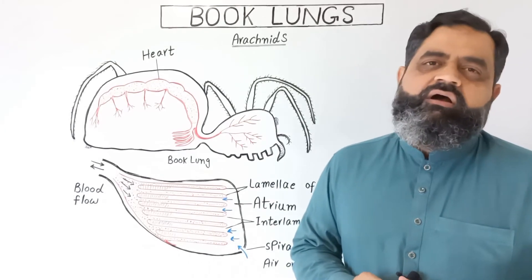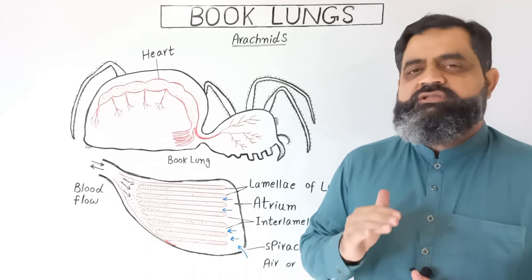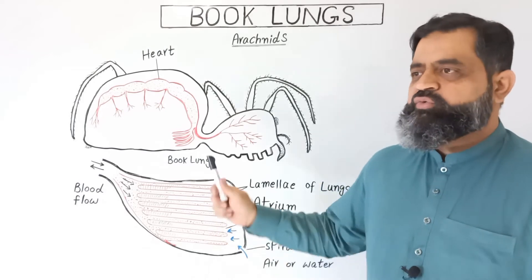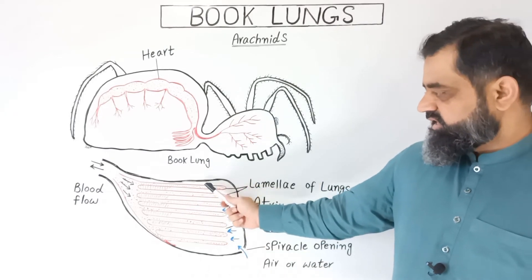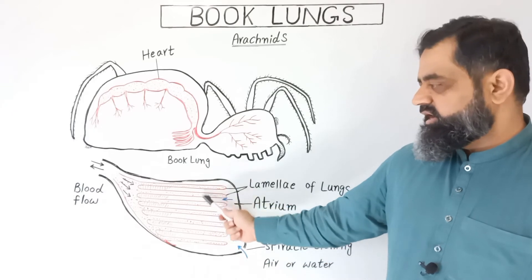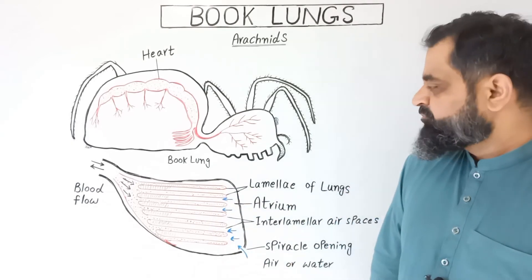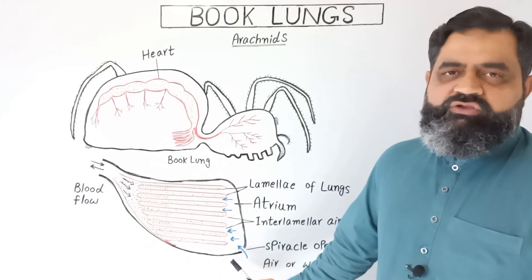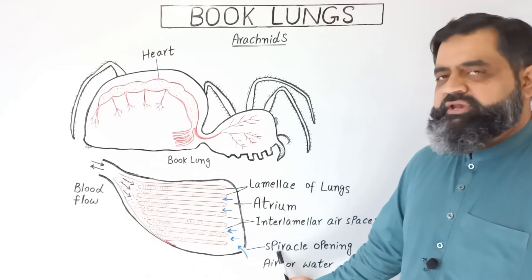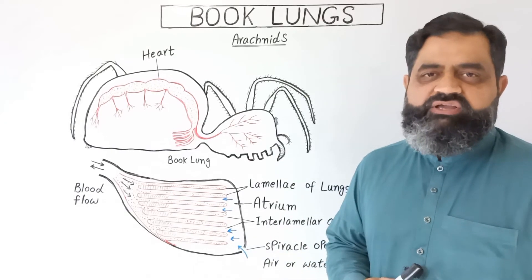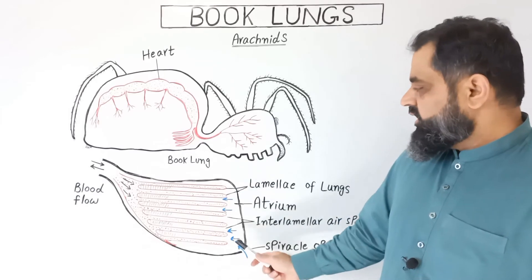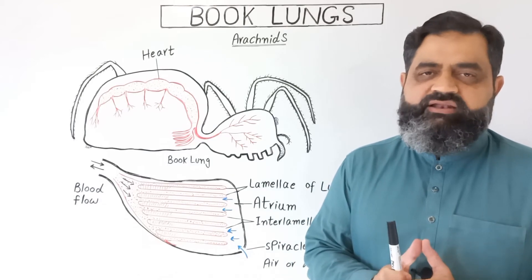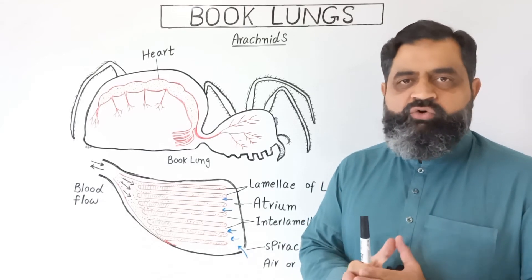These lungs are called book lungs because they look like the pages of a book. In a book there is no space between the pages, but right over here, as you can see, each lamella is just like a page of a book, and in between there are air spaces. This lung is associated with the outside of the body through a pore-like structure which is known as a spiracle, which is part of the tracheal system of the insects. This book lung is also associated with certain muscles which help to contract the lungs and move the air in and out.